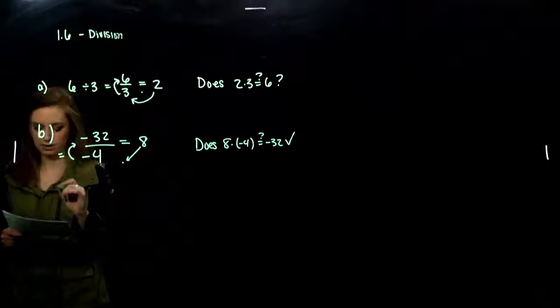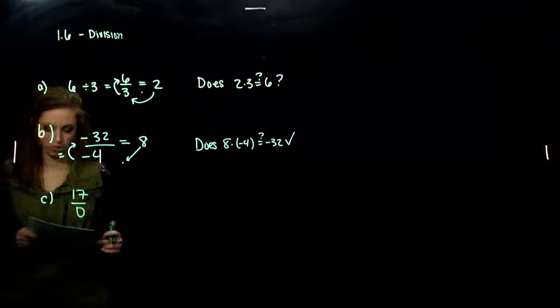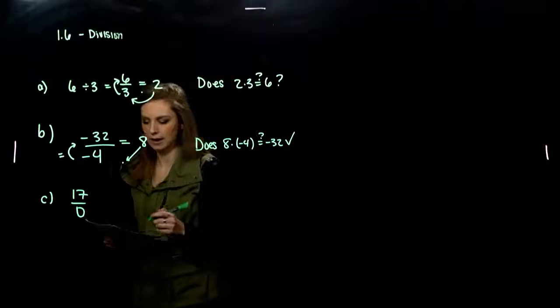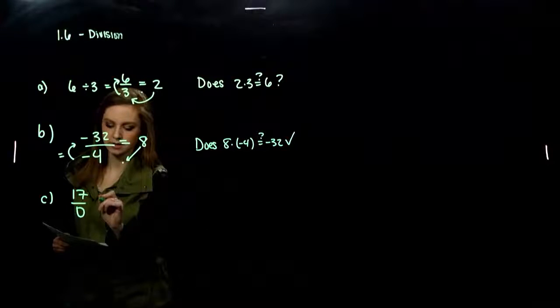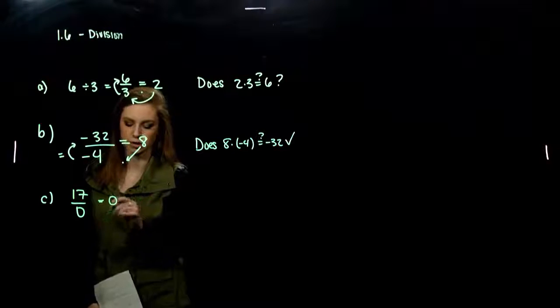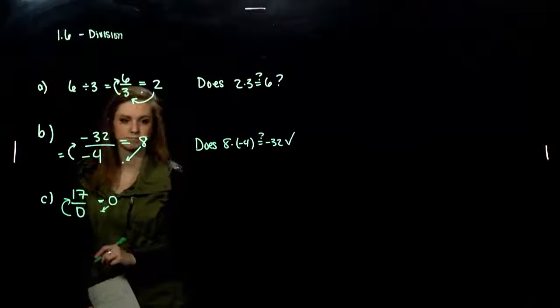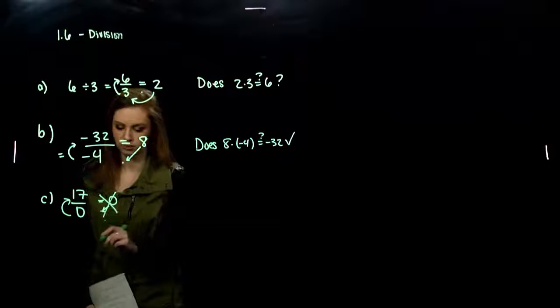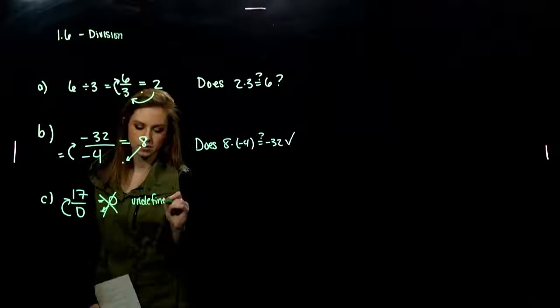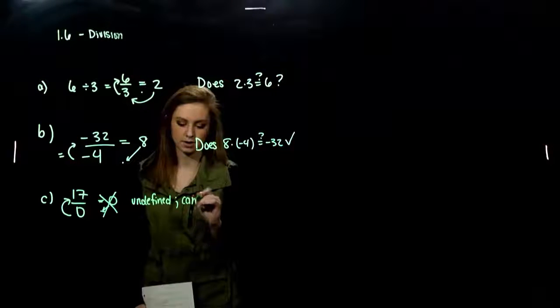What about for that next one? 17 divided by 0. Can we ever divide by 0? No, that can't happen. Because, for example, if this was equal to 0, let's just pretend that we think this is a solution. Is 0 times 0 equal to 17? No. That's not true. So this is undefined. Whenever we divide by 0, it's undefined. We can never do that. Can't divide by 0.